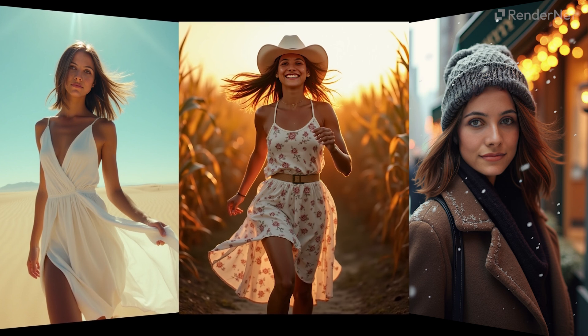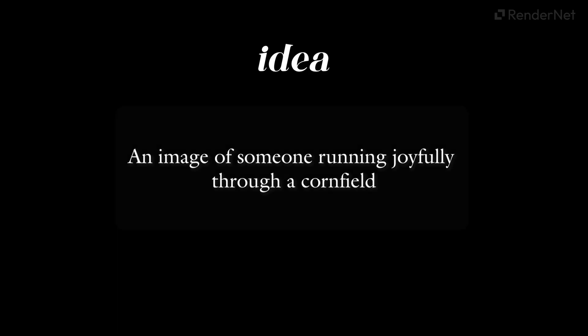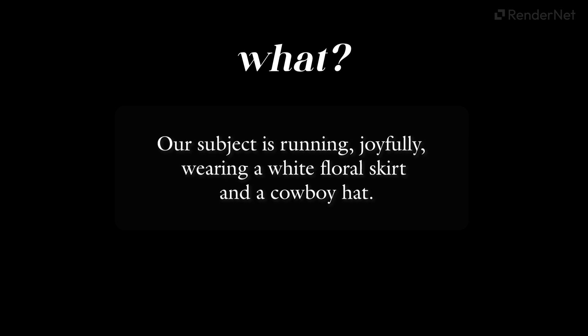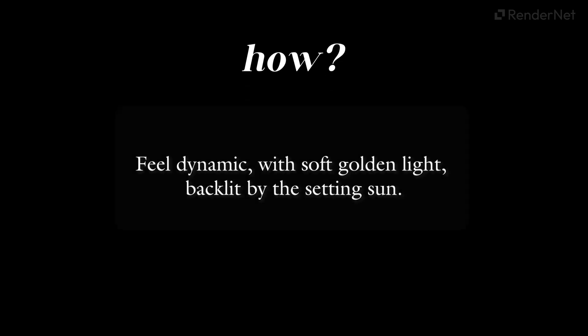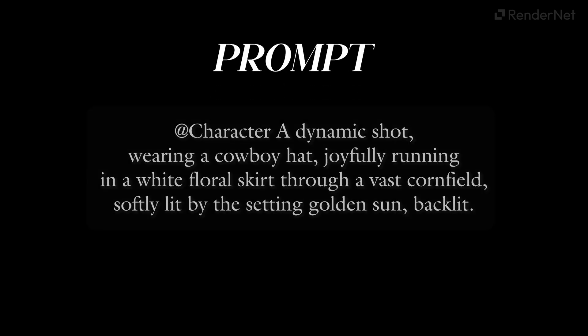Let's walk through a super prompt example. Say we want an image of someone running joyfully through a cornfield. What: our subject is running joyfully, wearing a white floral skirt and a cowboy hat. Where: they're in a vast cornfield at sunset. How: we want the image to feel dynamic, with soft golden light, backlit by the setting sun. Combined: a dynamic shot, wearing a cowboy hat, joyfully running in a white floral skirt through a vast cornfield, softly lit by the setting golden sun, backlit.